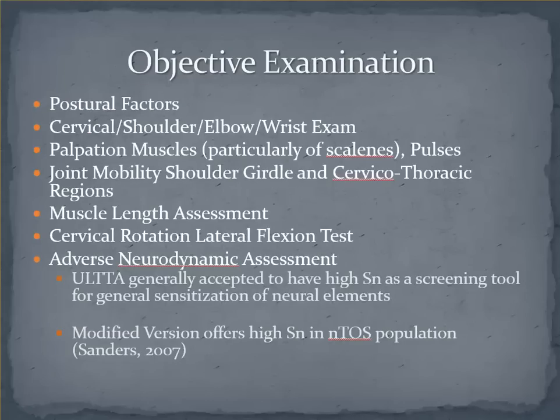In terms of the objective examination, there are a number of things that we can look at. One of those is related to postural abnormalities. Oftentimes you will see a classic presentation of a depressed shoulder girdle or drooping shoulder syndrome. A little clinical pearl here is if the AC joint is not sitting about 15 to 20 degrees higher than the SC joint, then there is likely too much depression occurring. This may lead to either traction on the neurovascular structures or potentially compression, depending on the interval that you're considering.